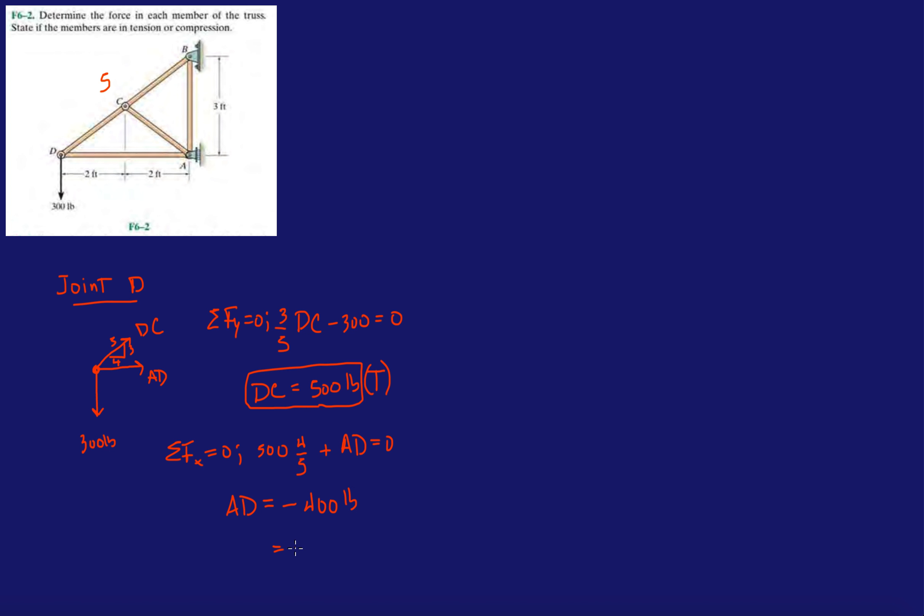So, we have AD is minus 400 pounds, which is actually 400 pounds in compression. Okay, so notice how I'm using this one for my calculations, but when I, for the results, this is what we have.